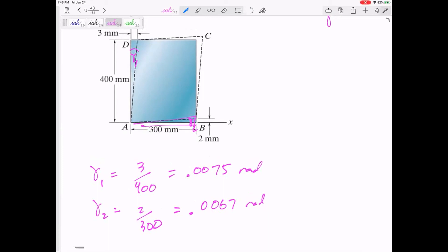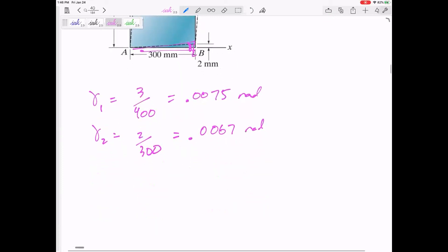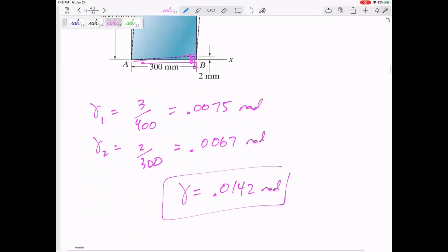And so since both of those are changing it from 90 degrees, I'm going to add those two up. So my gamma would be adding those two up, 0.0142 radians.